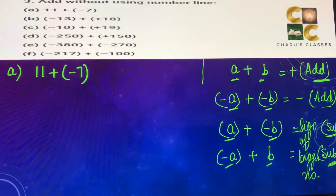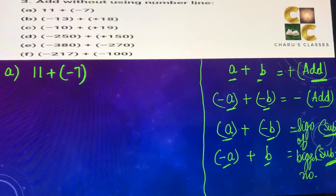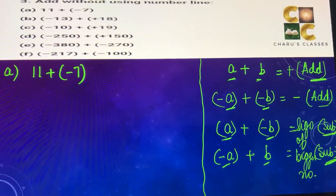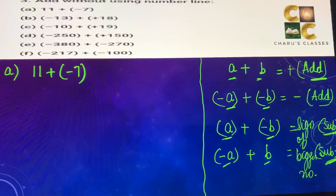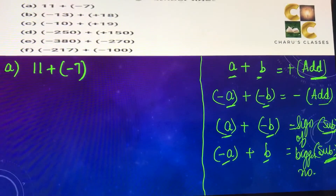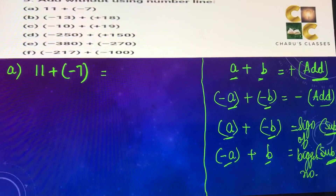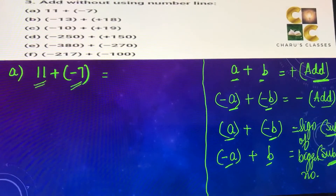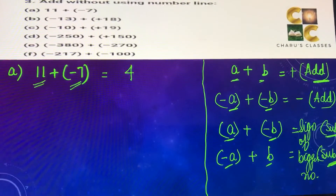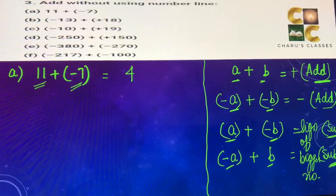To revise the rules: if both numbers are positive or both numbers are negative, we add them. If one is positive and one is negative, we subtract and take the sign of the bigger number. So for 11 plus minus 7 — one positive, one negative — we subtract: 11 minus 7 equals 4. The bigger number is 11 and it is positive, so the answer is positive 4.